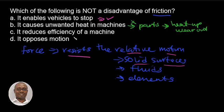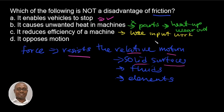Option C: it reduces efficiency of machines, because all machines lose input work to friction. And one way to improve the efficiency of a machine is by reducing friction. So this is a disadvantage of friction.